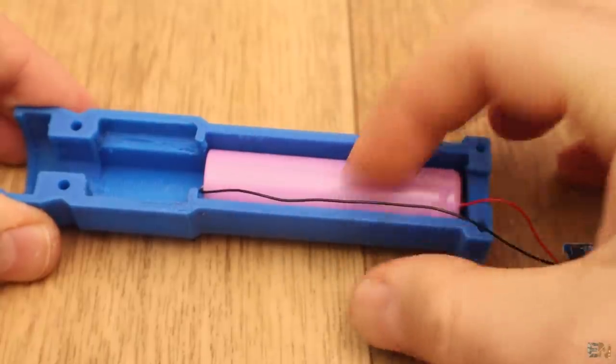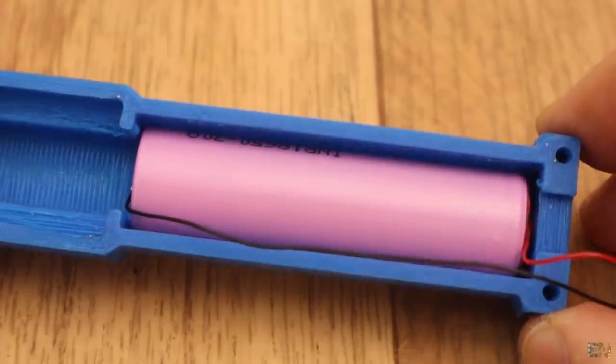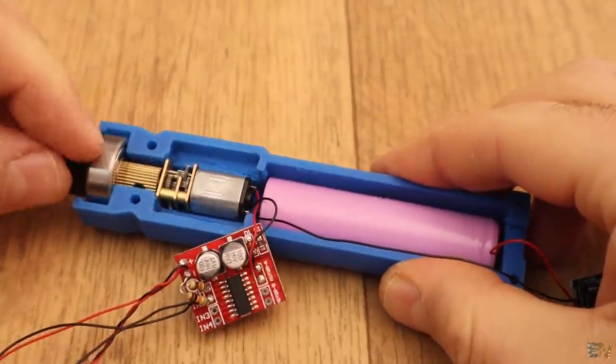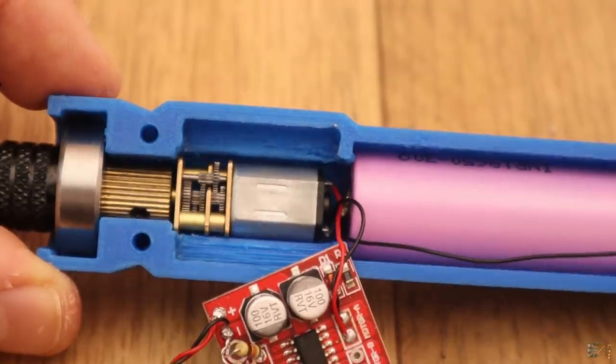Now fit the battery inside of the 3D printed case. Now place the DC motor with the bearing and the support. If you use the parts from the list that I give you, it should fit with no problems.